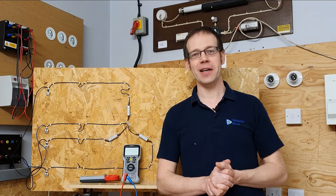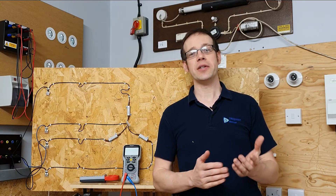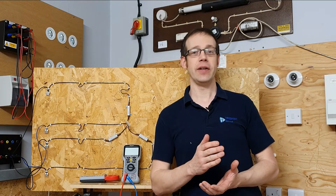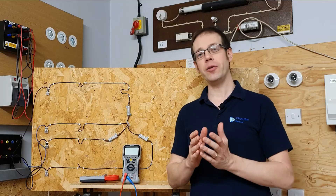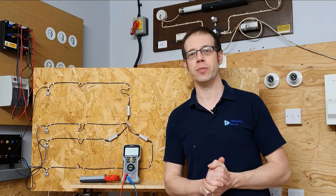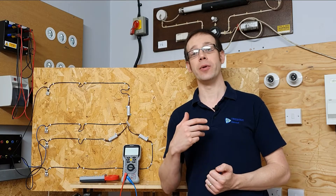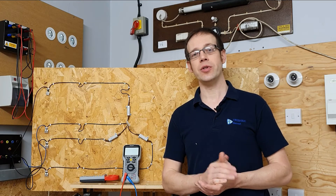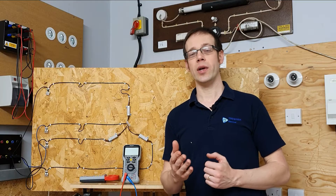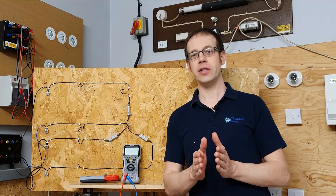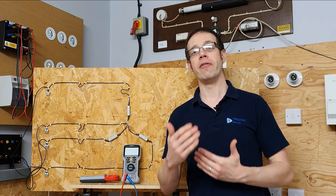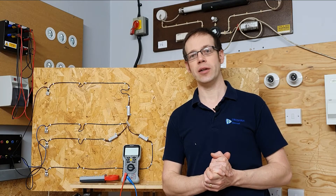Hello and welcome to this electrical principles training video. In this video we're going to continue considering the subject of three-phase electricity. We're going to look at loads that are connected in both star and delta — the two ways that we can connect loads into a three-phase system. More specifically, we're going to define and describe the different voltages and currents found in three-phase systems and look at the relationships between them.